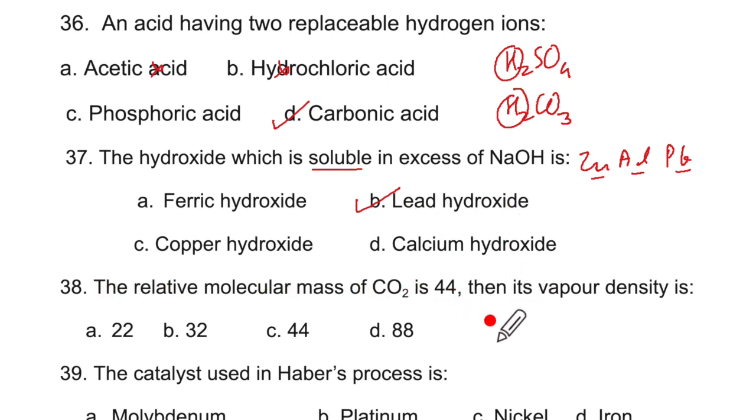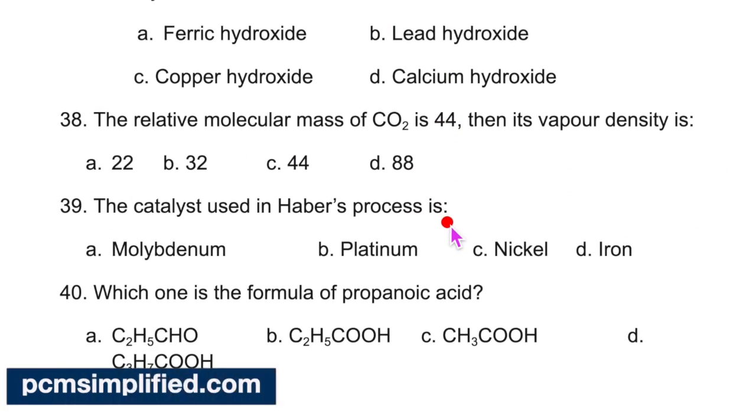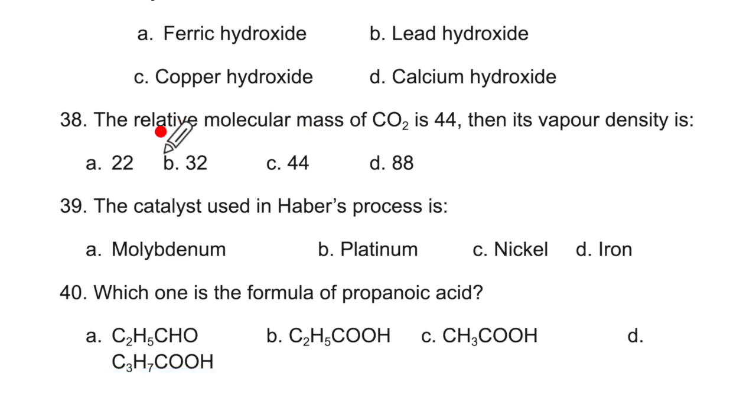The relative molecular mass of CO2 is 44. So if RMM is equal to 44, 2 into vapor density is equal to 44. What will be vapor density? 44 divided by 2 means 22. So A is the correct option. The catalyst using Haber's process. Haber's process is for the industrial preparation of ammonia. So it is going to be finely divided iron. Correct one is iron.